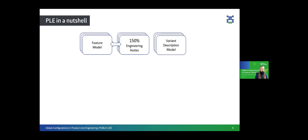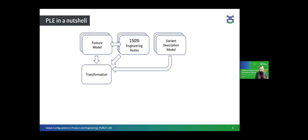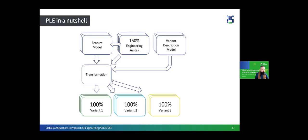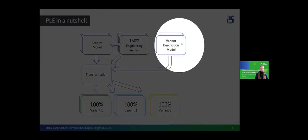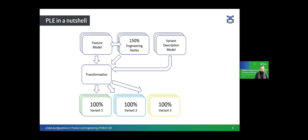Based on such a VDM, the variant specific assets can now be generated out of the 150% engineering assets in a so-called transformation, as we have earlier linked features to variable parts of the solution assets. This has multiple advantages, like consistency across asset types. If you consider that the same feature model is linked to different asset types, we configure a variant once by feature selection and then generate variant specific assets in those different tools consistently, all according to the same feature selection.